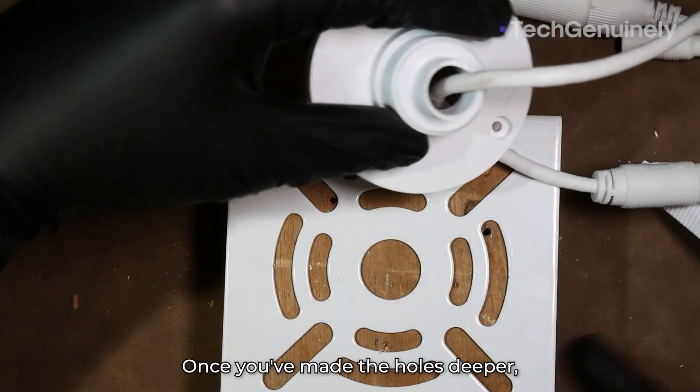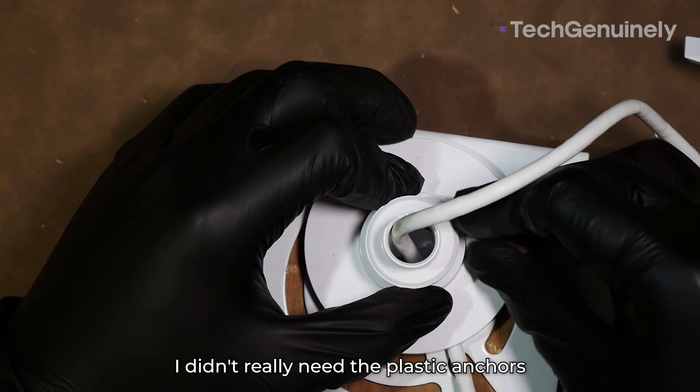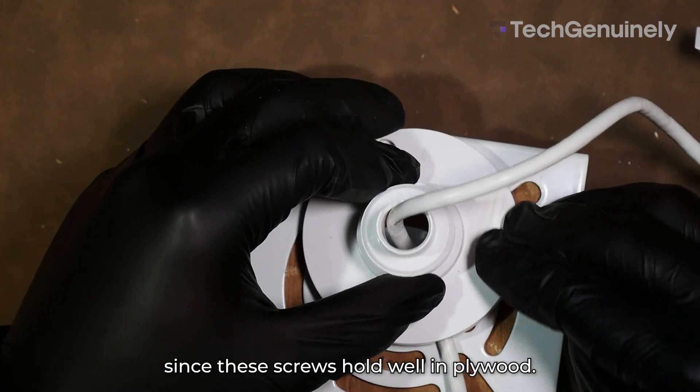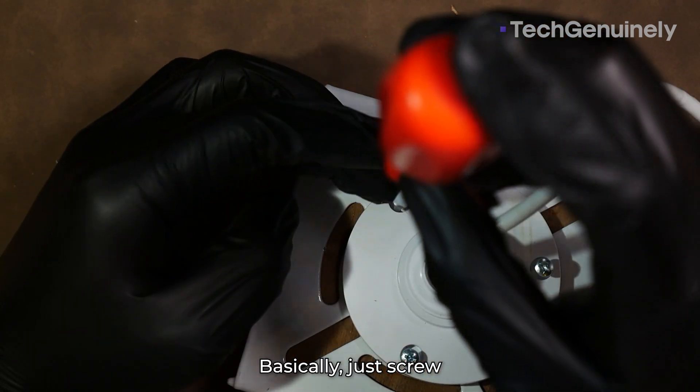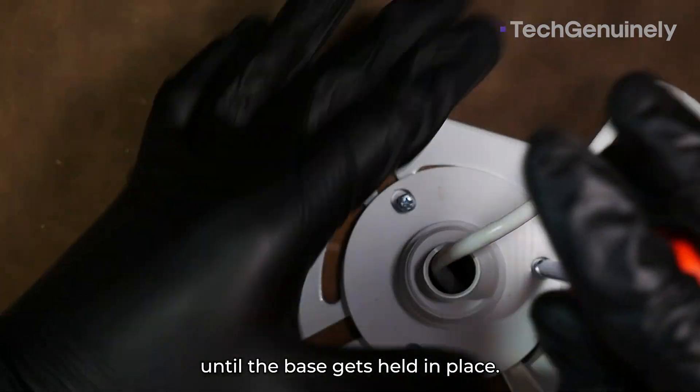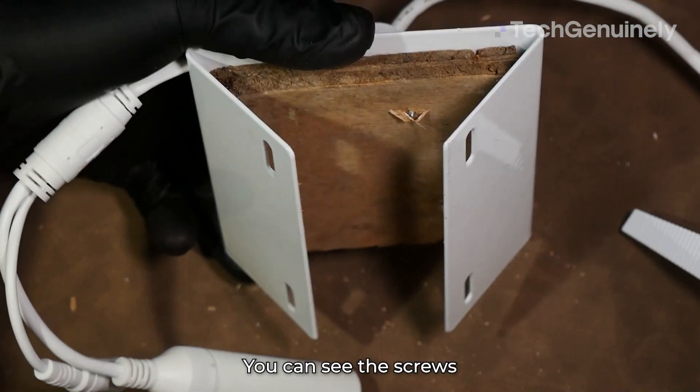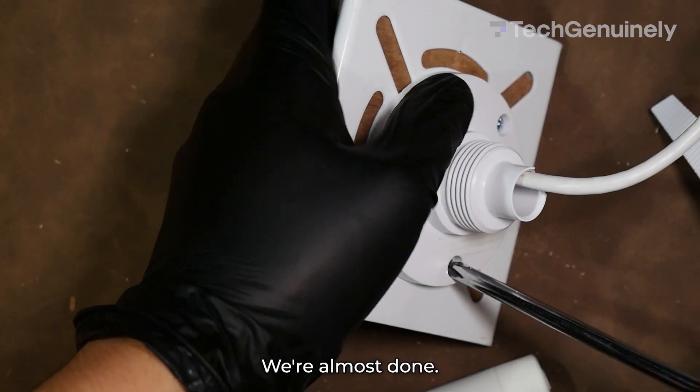Once you've made the holes deeper, the screws are ready to go in. I didn't really need the plastic anchor since these screws hold well in plywood. Basically, just screw all three of them a little bit until the base gets held in place. This way, it's not swinging around making your life more difficult. You can see the screws peeking from the back. We're almost done.